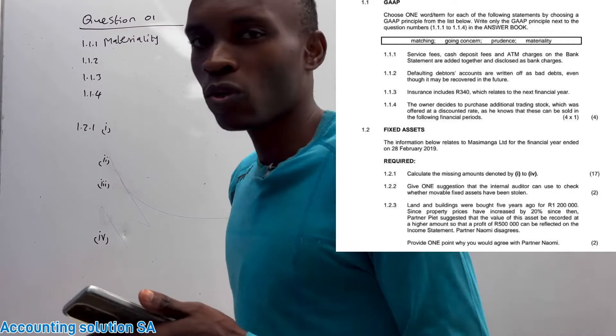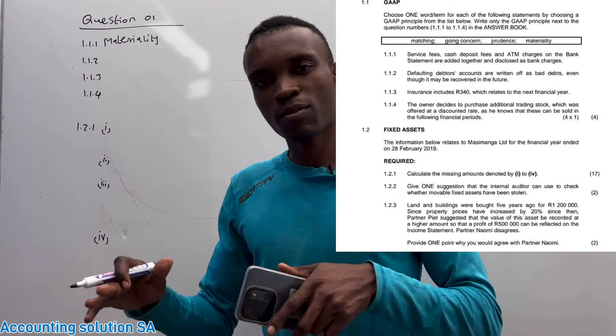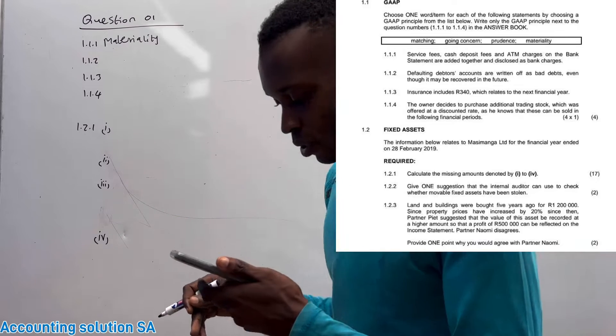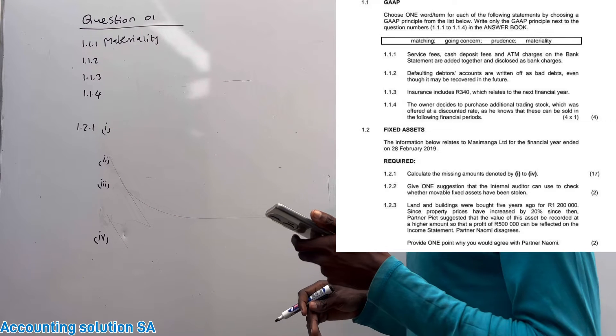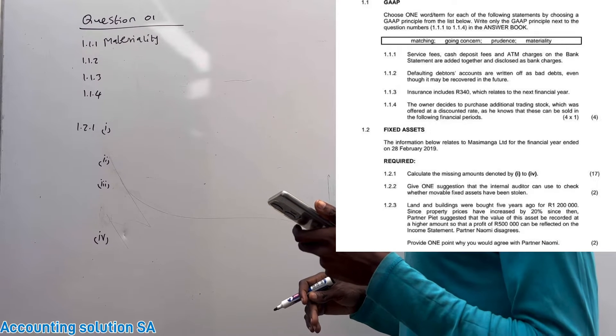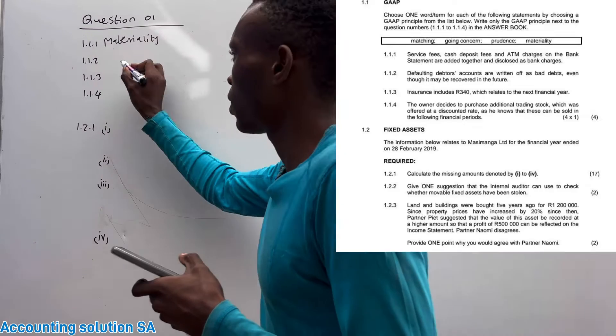Because you can't record a lot of things separately because they will waste time and space, you need to add them together. Number two: Defaulting debtor's amount are written off as bad debt even though it may be recovered in the future, so it's prudent.